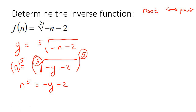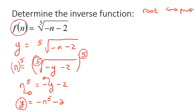Get the y by itself. Take this to that side and take this to that side. You end up with y equals to negative n to the fifth, take away 2. Now we just rewrite this using a better format. They used f, so we'll say f negative 1 and then negative n to the fifth, take away 2.